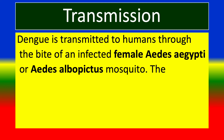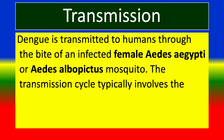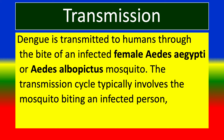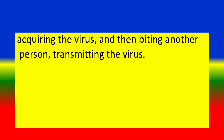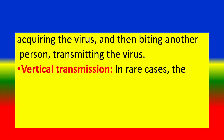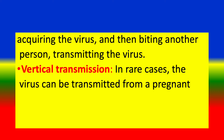Transmission. The transmission cycle typically involves a mosquito biting an infected person, acquiring the virus, and then biting another person, transmitting the virus. In rare cases, vertical transmission can occur, where the virus is transmitted from a pregnant woman to her fetus.